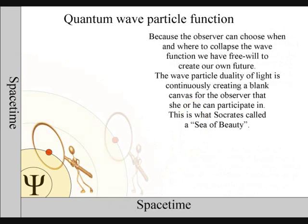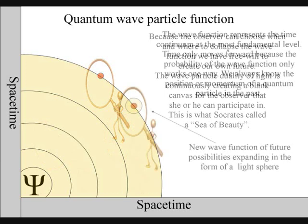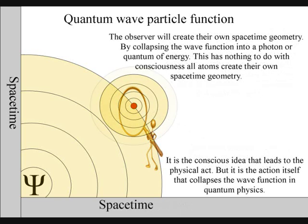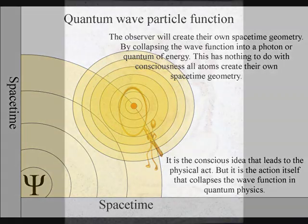It is because the observer can choose when and where to collapse the wave-function that we have free will. Life will create its own ripples in the fabric of space-time, forming its own broken symmetry of its own evolutionary path, or timeline.